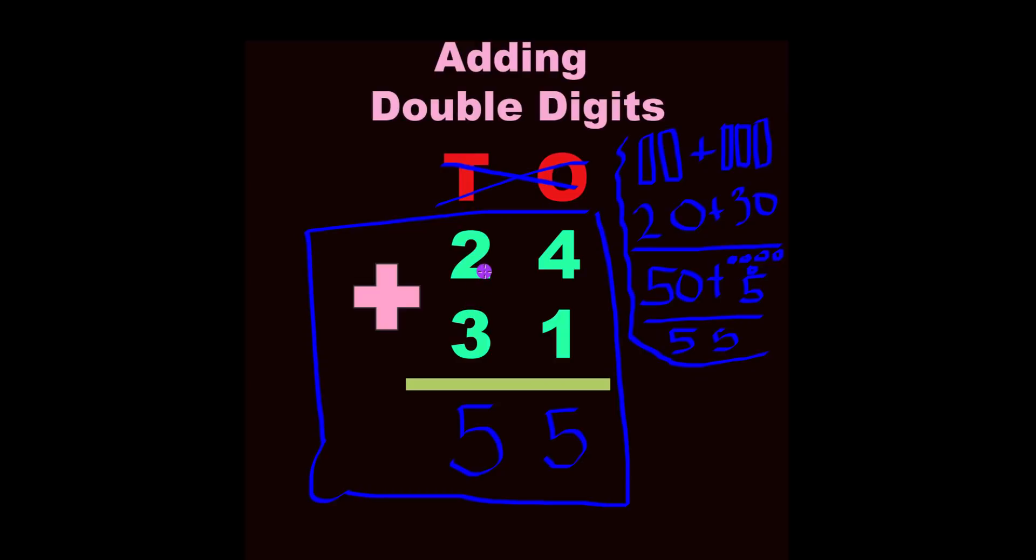If this said 25 plus 31, you would add 5 plus 1 straight down, and 2 plus 3 straight down. Let me say that slowly so that you're not confused, because I taught you two different ways to get the answer.